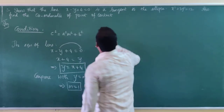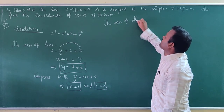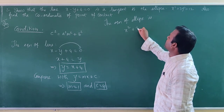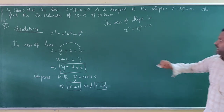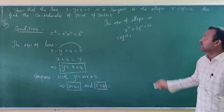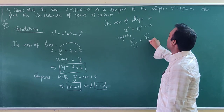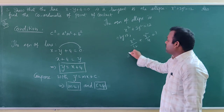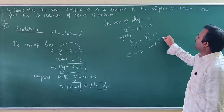Next, we take the equation of the ellipse: x squared plus 3y squared equal to 12. To write it in standard form, divide the equation by 12, giving x squared over 12 plus y squared over 4 equal to 1. From this, we get a squared equal to 12 and b squared equal to 4.